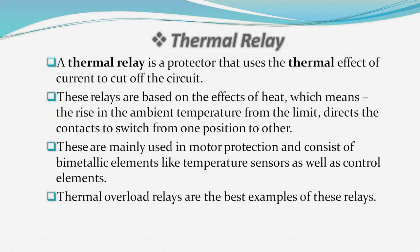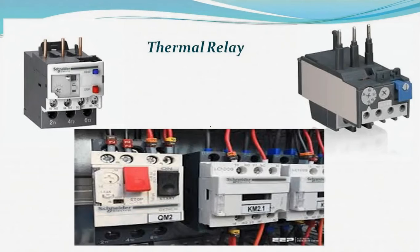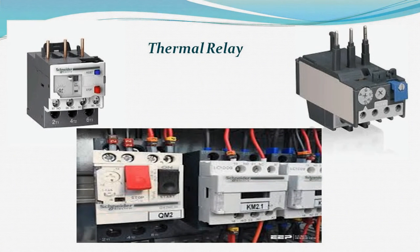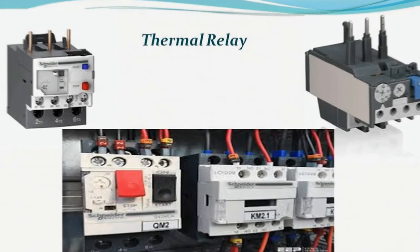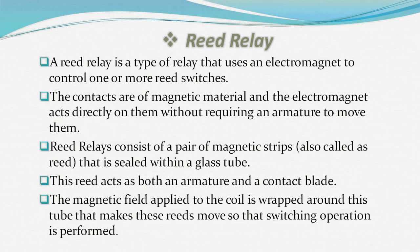Thermal overload relays are the best examples of thermal relays. A reed relay is a type of relay that uses an electromagnet to control one or more reed switches. The contacts are of magnetic material and the electromagnet acts directly on them without requiring an armature to move them.